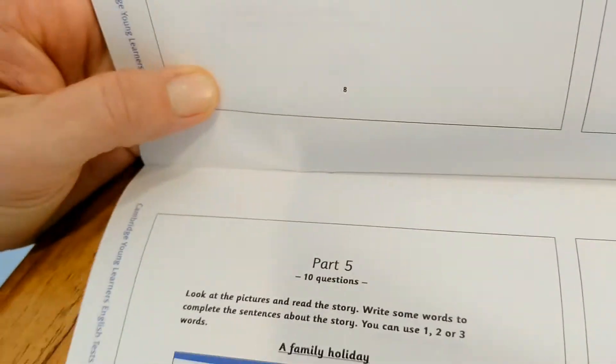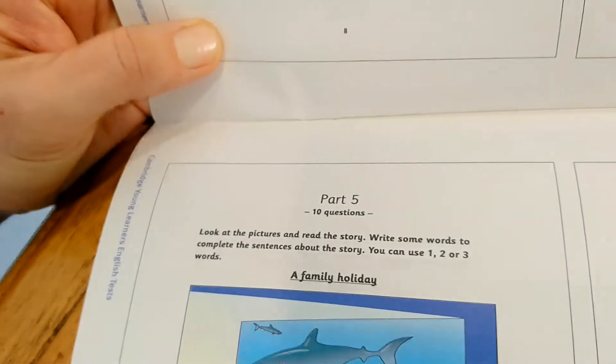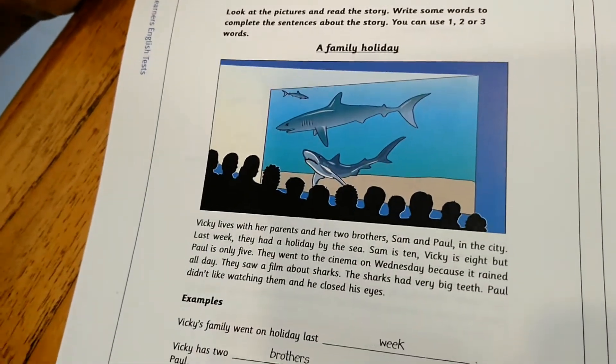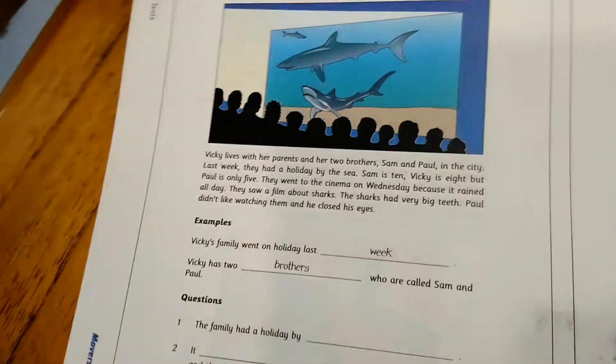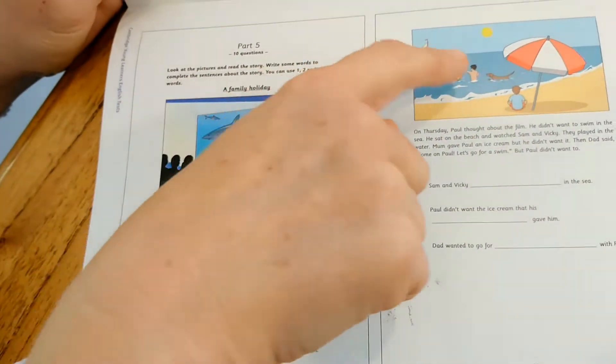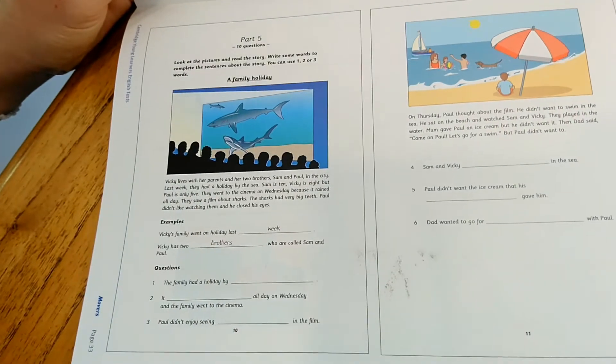Part five. You have to look at the pictures. You have two pictures. And read the story below and write some words to complete the sentences. This is based on the pictures and on the text that you have.